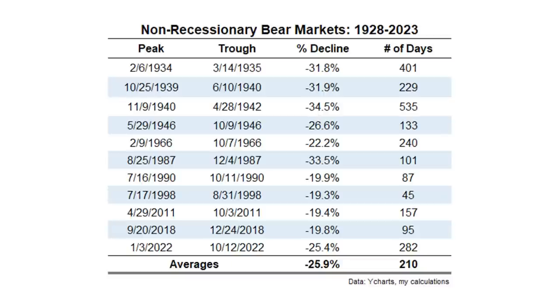The most recent bear market, peak to trough, was down 25% and lasted 282 days. So this was a run-of-the-mill non-recessionary bear market — it was average. The decline was right in line, and while it lasted a little longer than the average non-recessionary bear market, we basically just happened to live through the average.